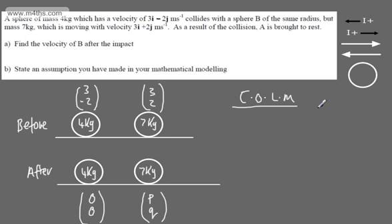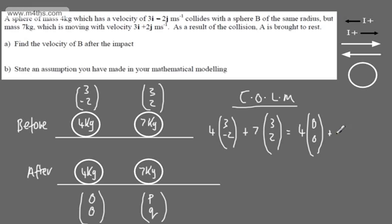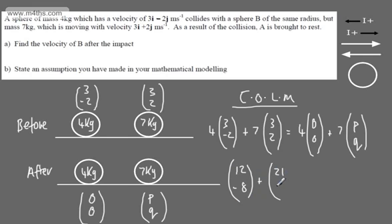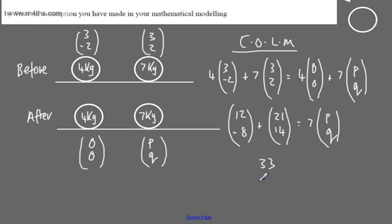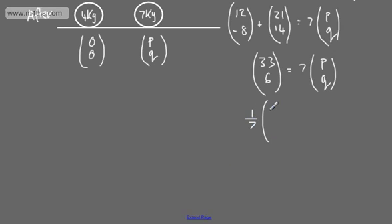Using the conservation of linear momentum, total momentum prior to the collision equals total momentum after. Momentum is mass times velocity. So we have 4 multiplied by column vector (3, -2), plus 7 multiplied by (3, 2), equal to 4 multiplied by (0, 0), plus 7 multiplied by (p, q). That gives us (12, -8) plus (21, 14) equals 7 times (p, q). Adding those together: column vector (33, 6) equals 7 lots of (p, q).